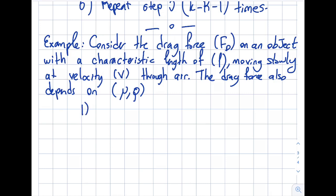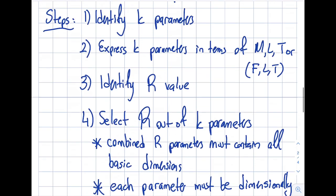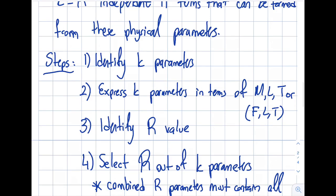The example reads: consider the drag force on an object with a characteristic length L moving slowly at velocity V through air. The drag force also depends on the viscosity and the density of air. By reading the question, I can obtain the first step.